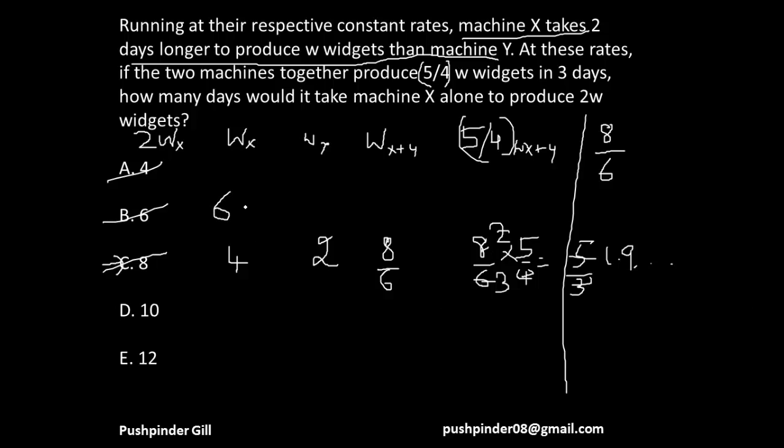So that means I'm down to 2 options. If you wanna double check it, you can. It takes 6 days for machine X to produce 2W widgets, so to produce W widgets it takes 3 days. For Y it will take 1 day. So together they're gonna take 3/4 days, and they're gonna take 3/4 times 5/4, that is even less than 1.9. So I should be moving down.